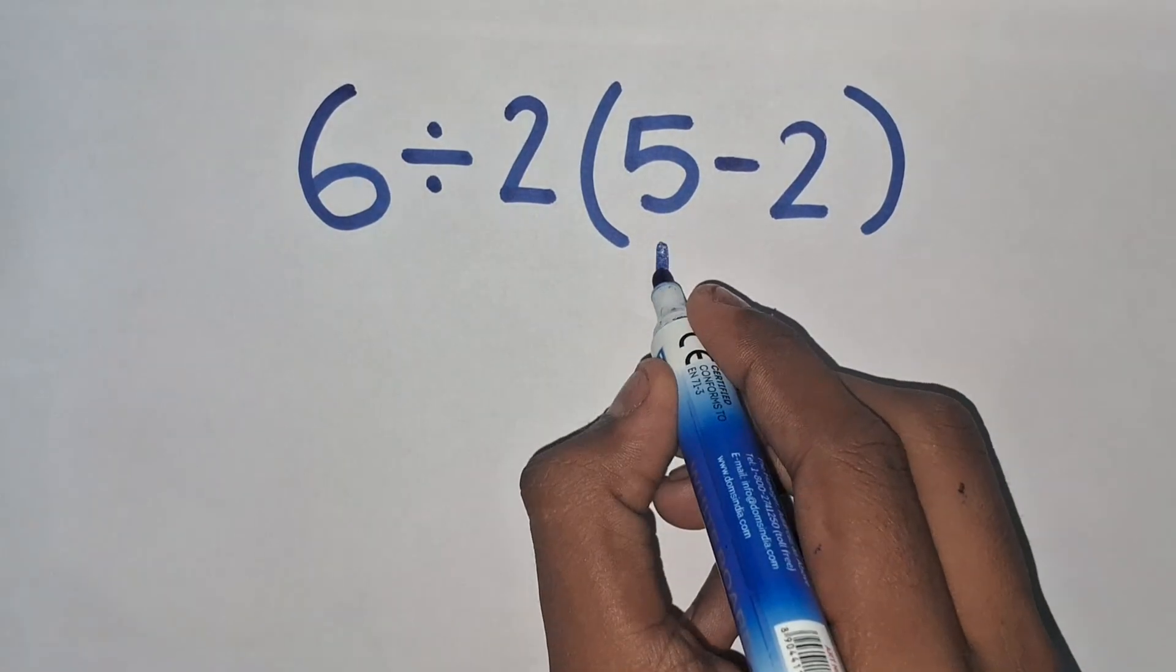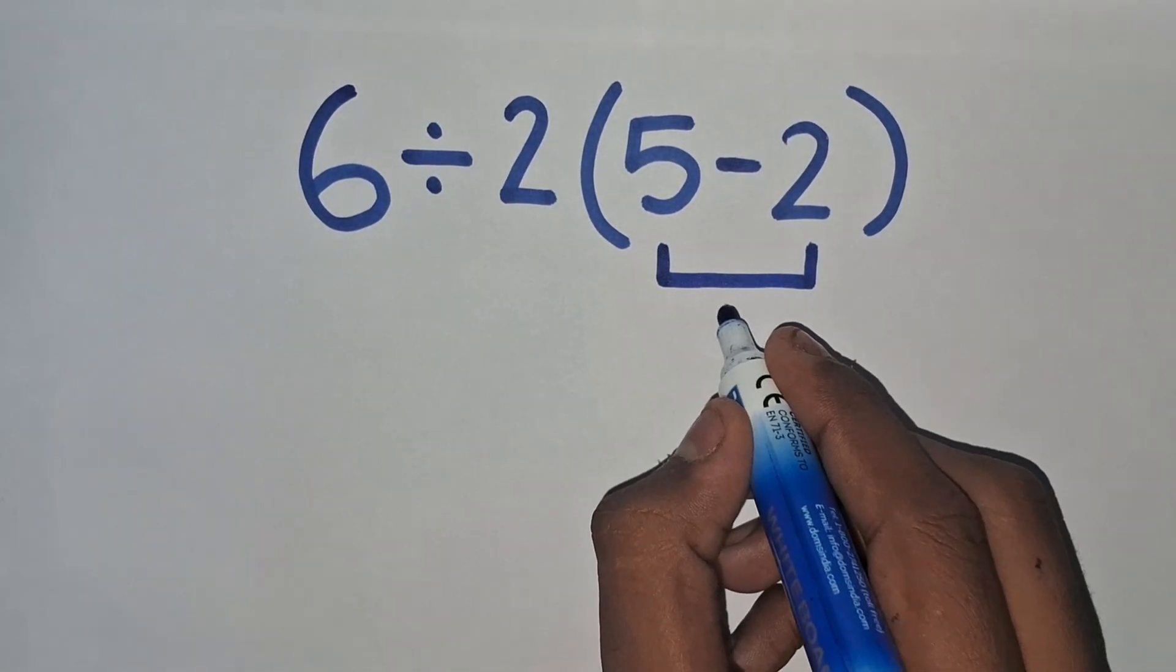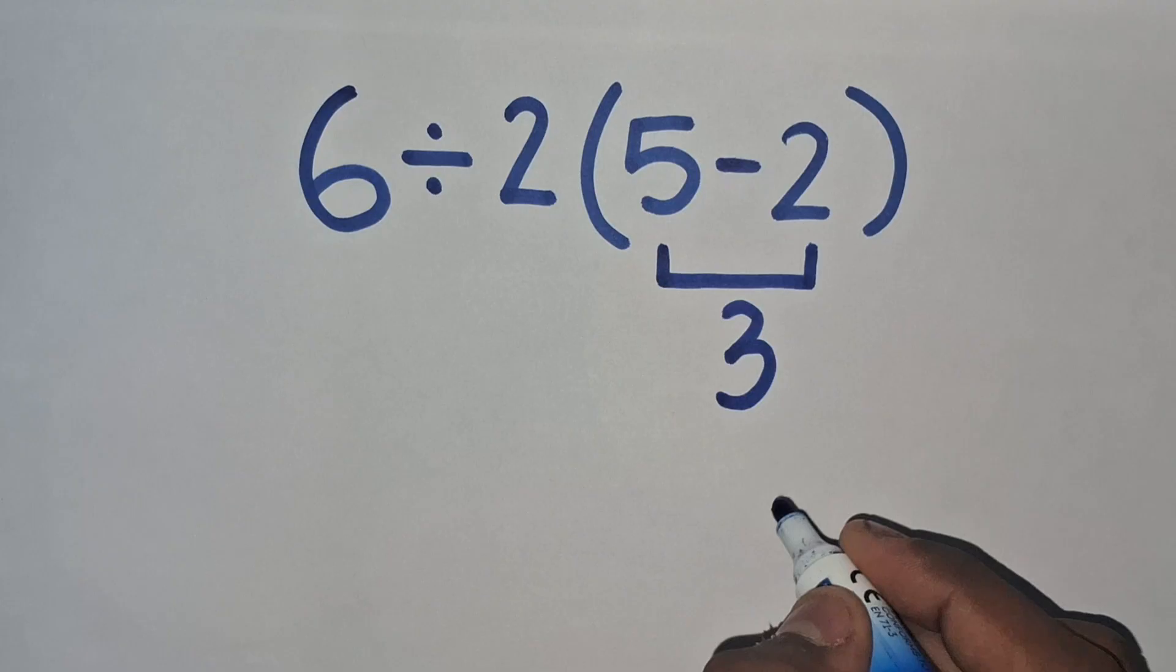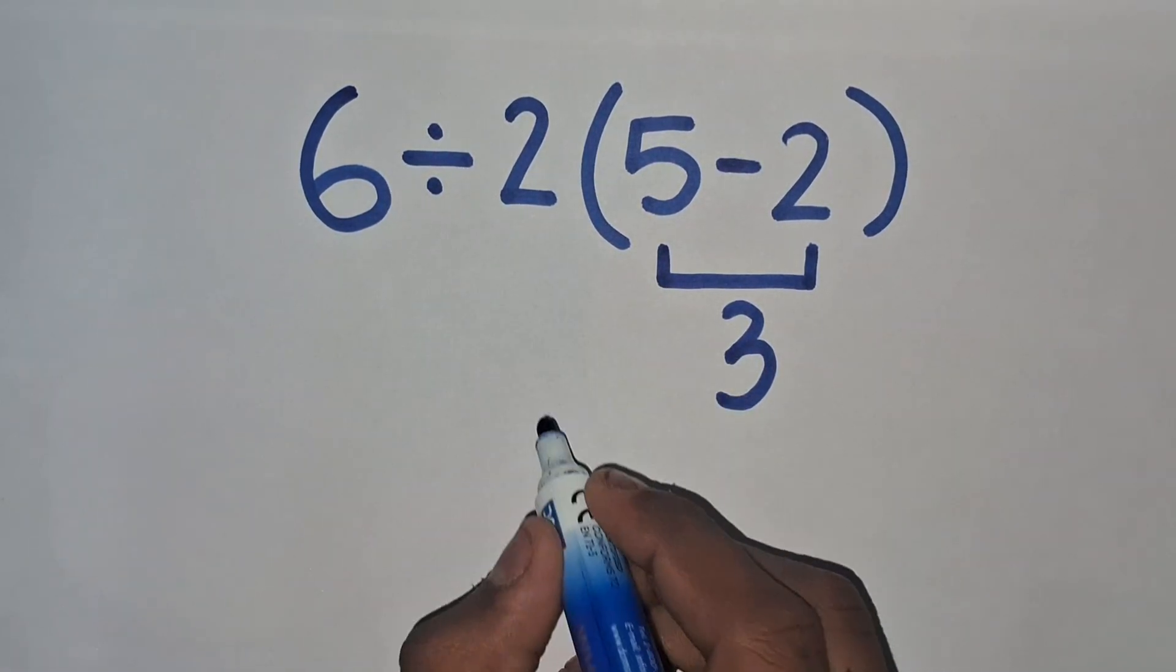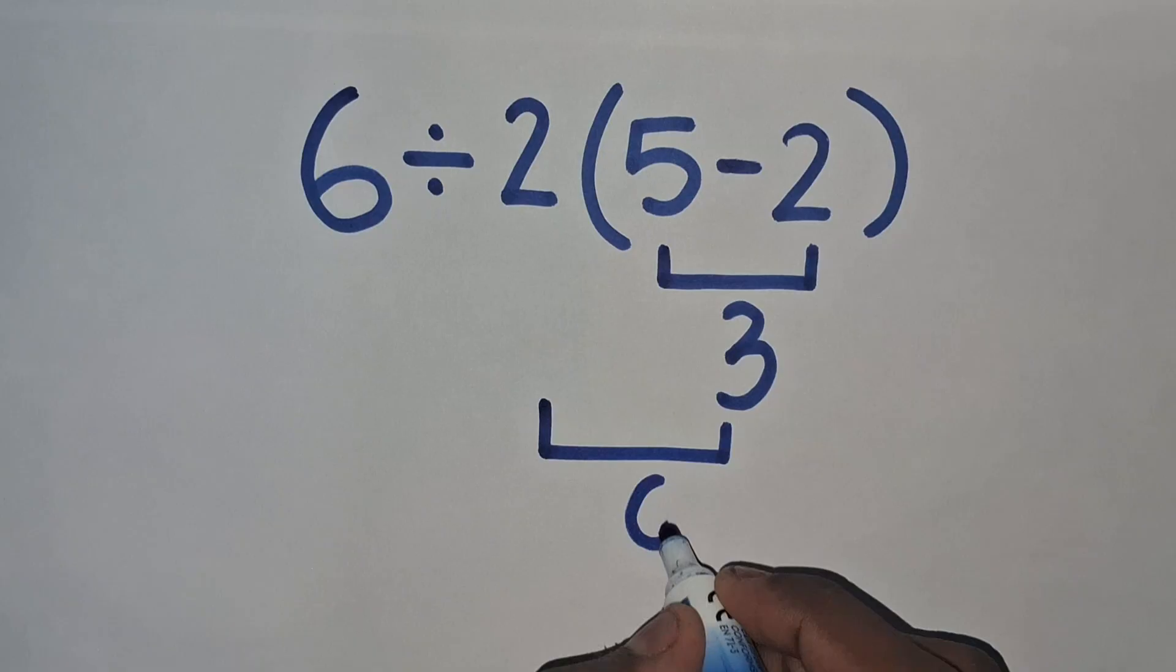5 minus 2 equals 3, and this 3 is multiplied by 2, so 3 times 2 equals 6.